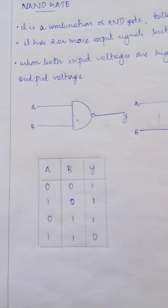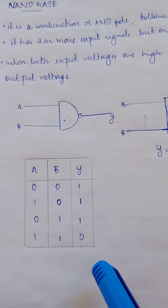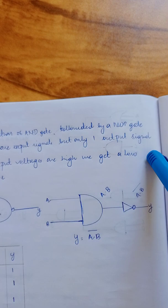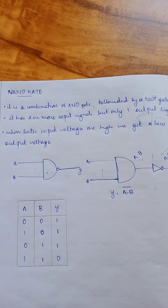When both input voltages are high—that is, 1 and 1—A dot B will be 1. But A dot B whole bar will be 0. So when both input voltages are high, we get a low output voltage.